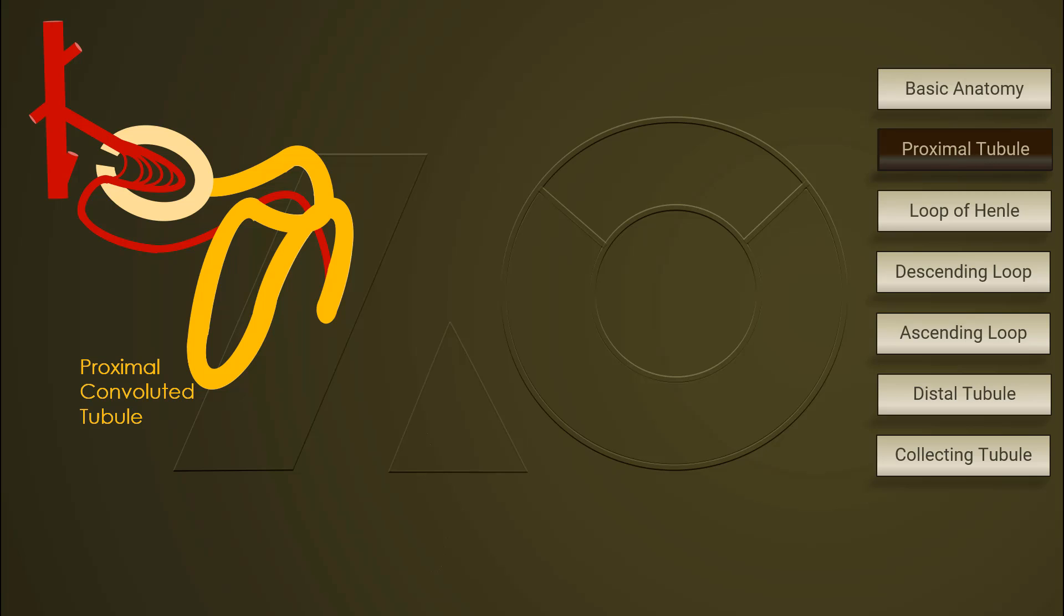First, the proximal tubule. In proximal convoluted tubule, almost all glucose bicarbonate amino acid are reabsorbed from tubular lumen back into the blood.